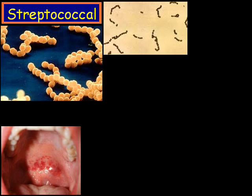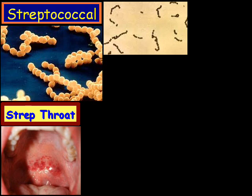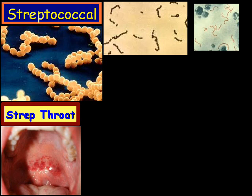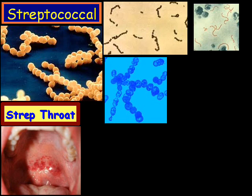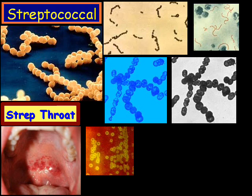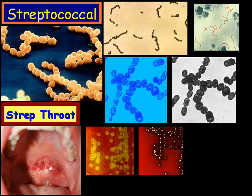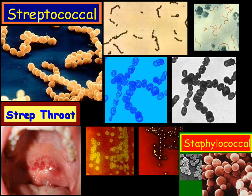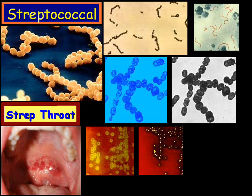Streptococcal bacteria is probably more commonly known as strep throat. It's a spherical, meaning round or shaped like a ball, gram-positive shaped bacteria. It's part of the lactic acid bacteria group. This is different from Staphylococci, where Staphylococci has grape-like clusters of cells. Strep, or strep throat, typically shows the bacteria in a chain-like or twisted chain arrangement when viewed under a microscope.